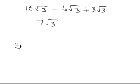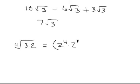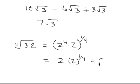What about the fourth root of 32? Well, we could write this as 2 to the 4th times 2, and write this in exponential form. You would just multiply exponents — 4 times one-fourth is 1 — so that would just leave a 2. We couldn't do anything else with this 2, so getting it back into radical form gives us 2 times the fourth root of 2.